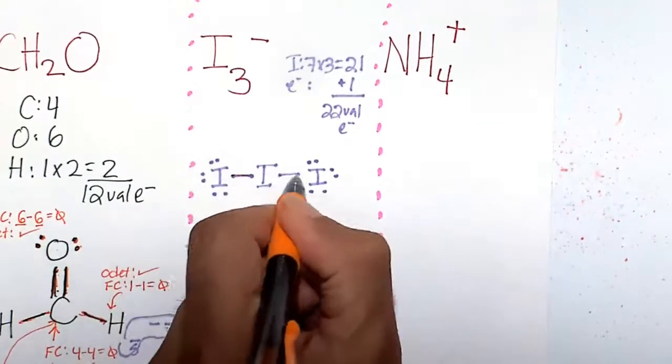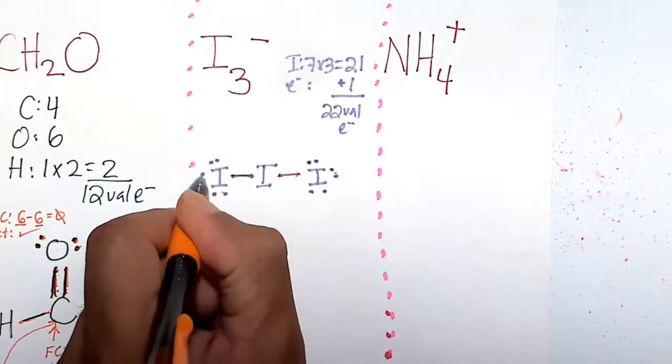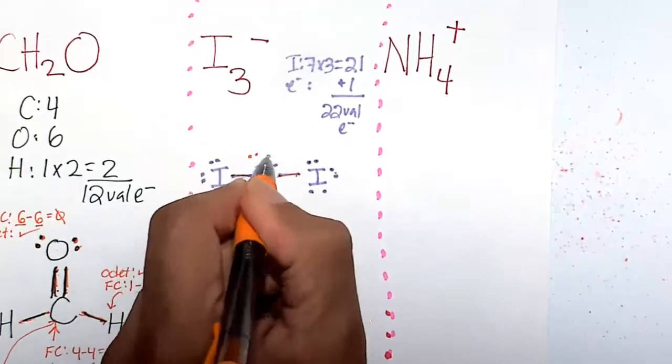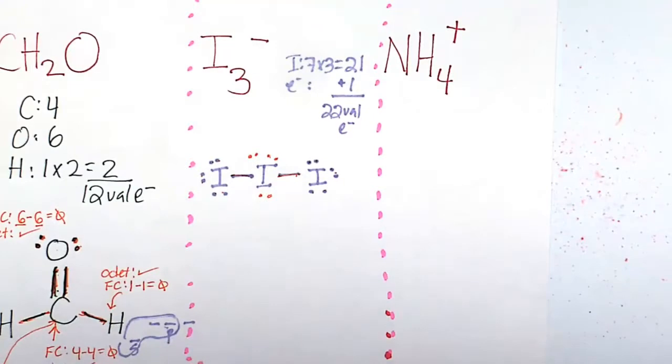1, 2, 3, 4, 5, 6, 7, 8, 9, 10, 11, 12, 13, 14, 15, 16, 17, 18, 19, 20, 21, 22. I think that would be the best representation of I3-.